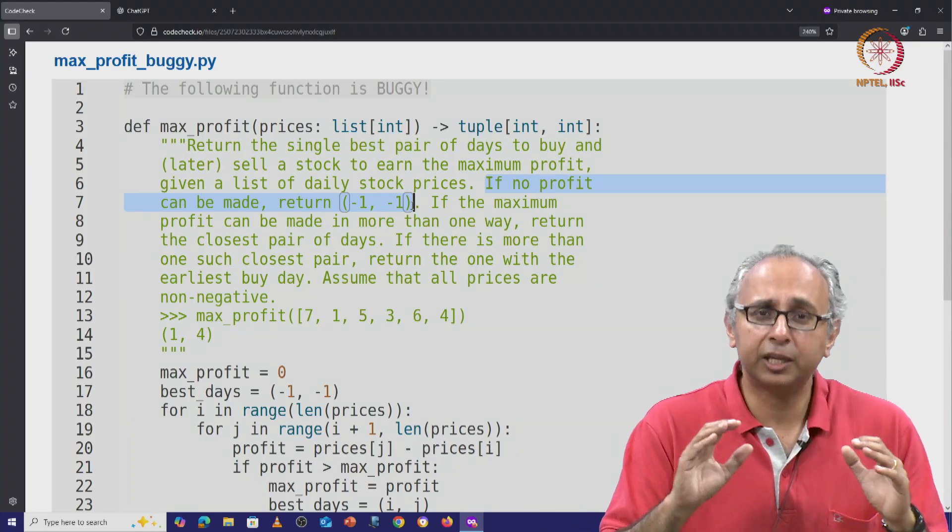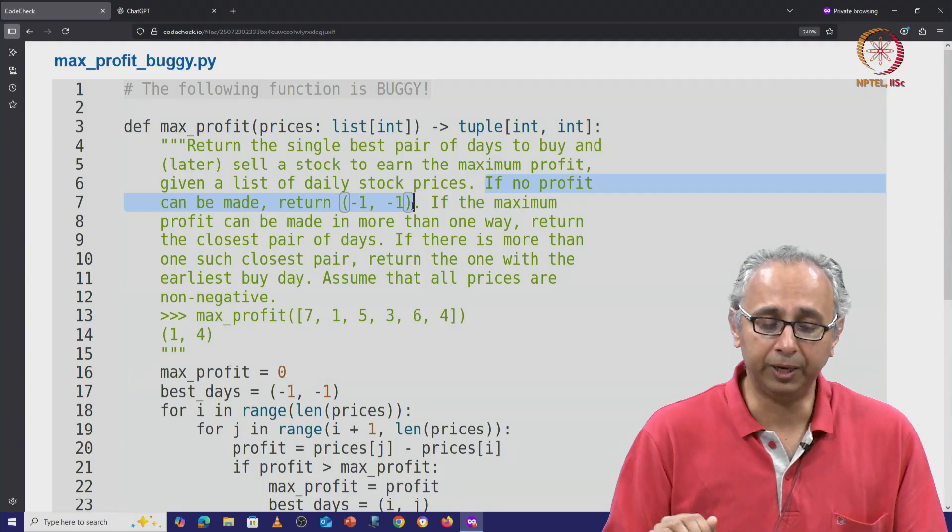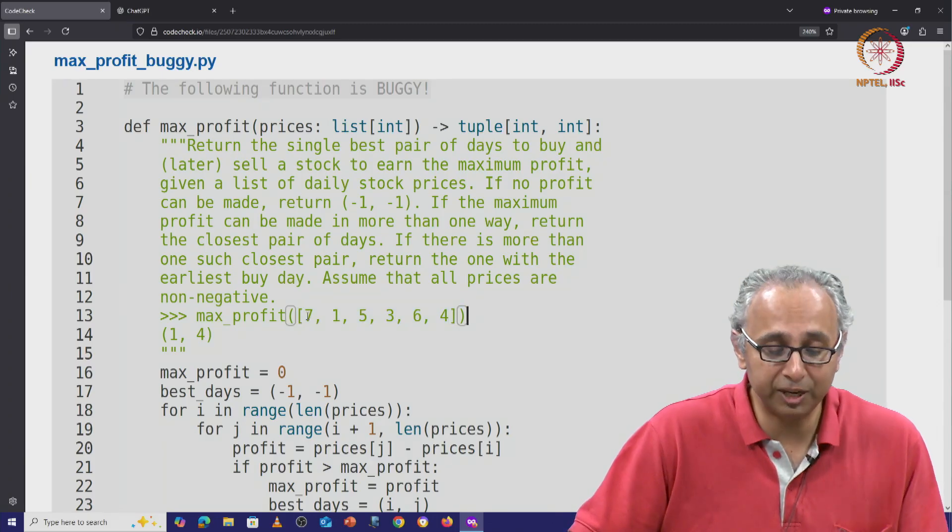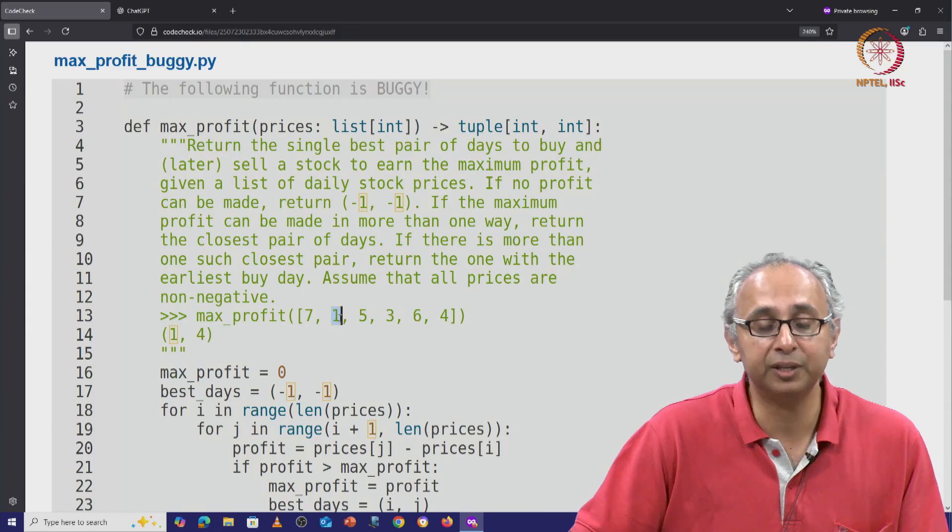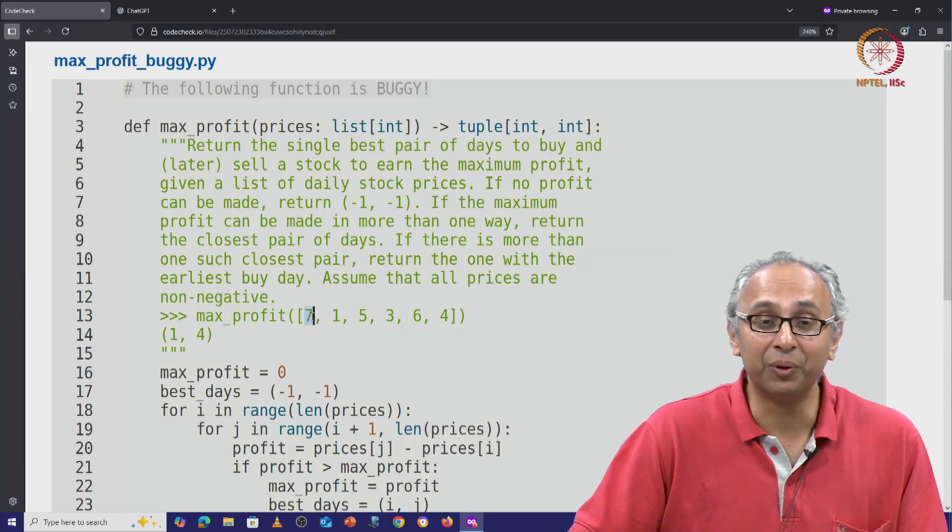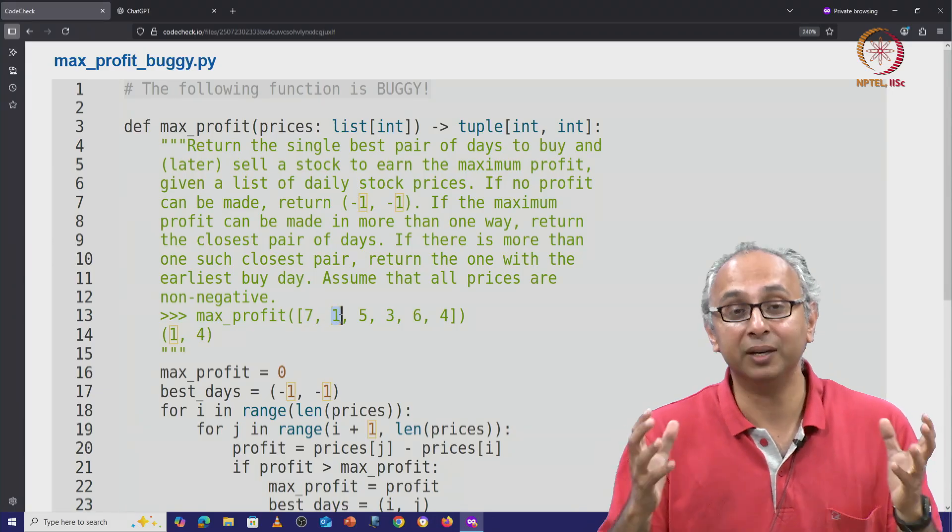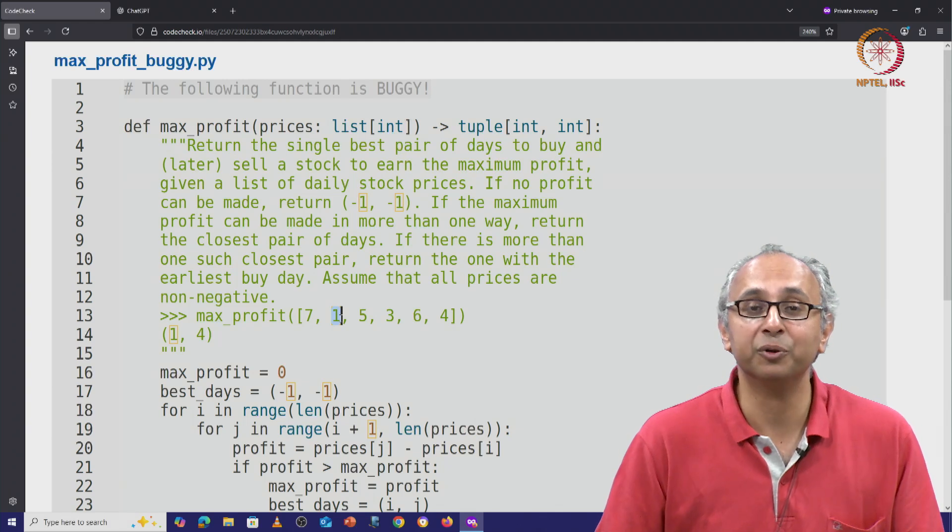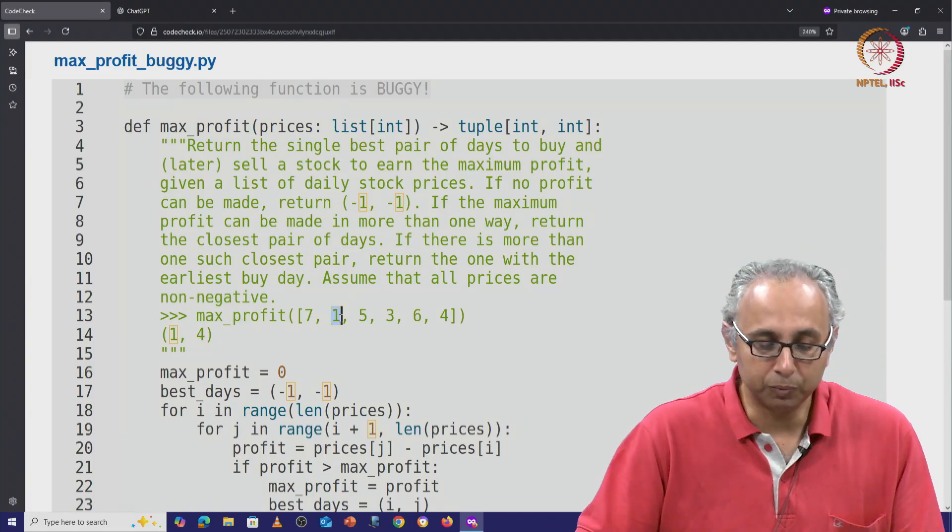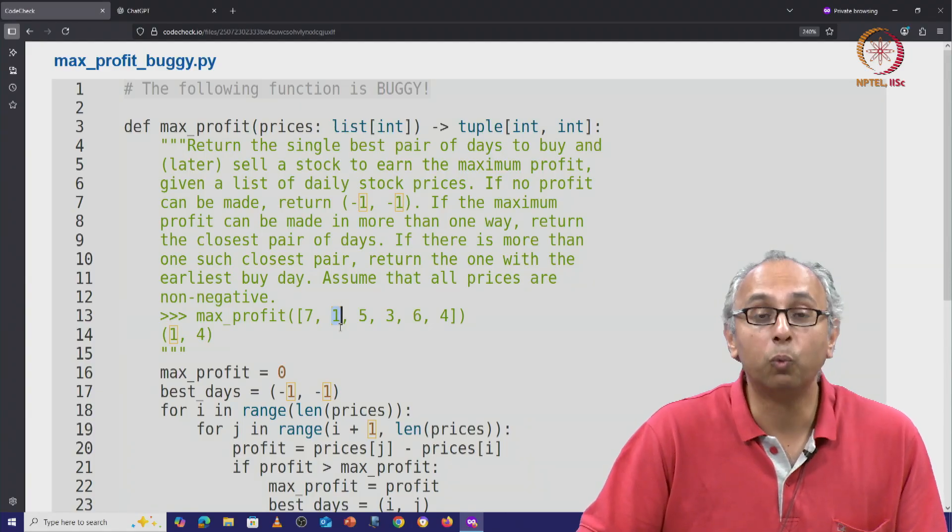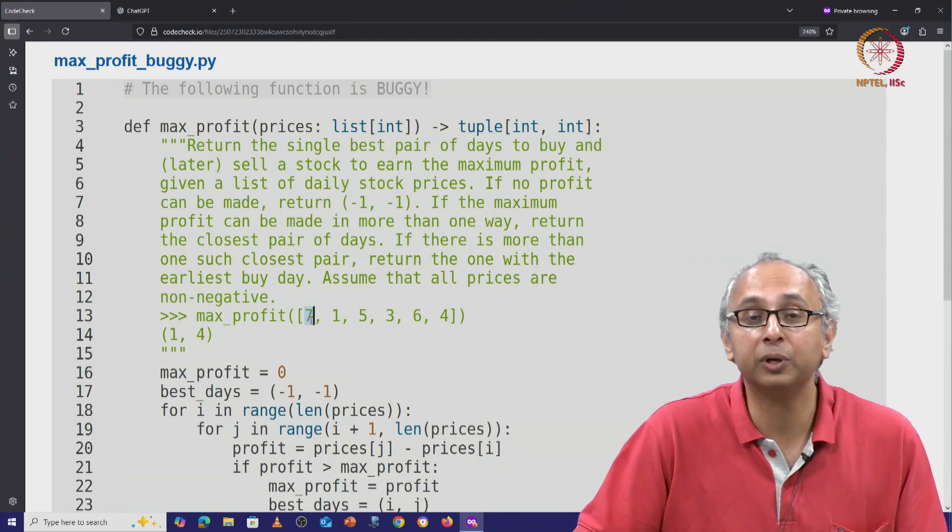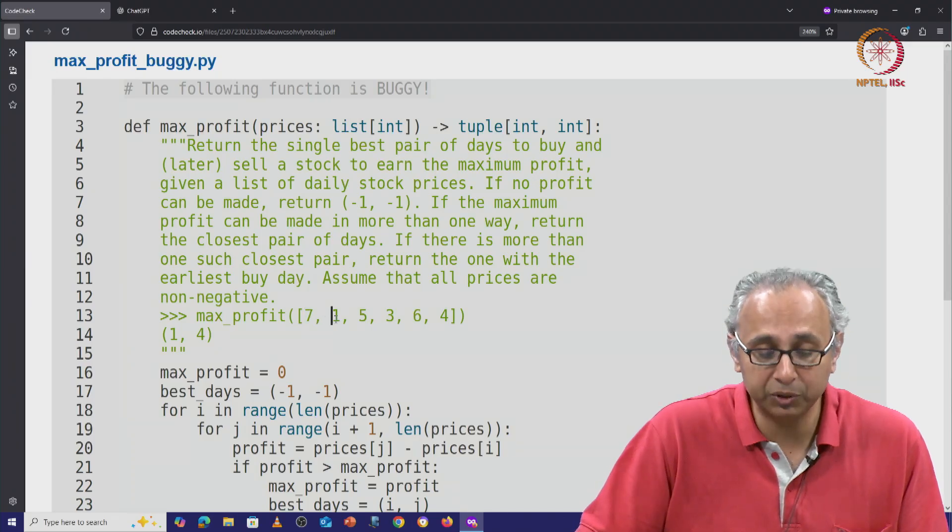So let's first take a look at an example because there is more to this doc string. The example is we are given this list of prices. Since the maximum value here is 7 and the minimum value here is 1, it would be wonderful if we could sell on day 0 and buy on day 1 because then we would earn 6 rupees or whatever the units are. But remember we can't sell before we buy. So if we want to buy at this low price of 1 unit, we can only sell after day 1. We will have to let go of the stock on day 0. We would buy it on day 1 let us say.